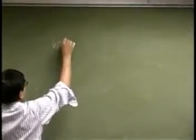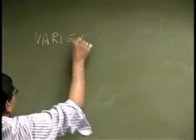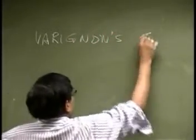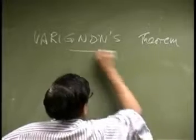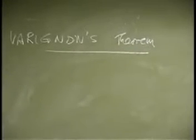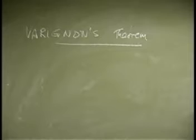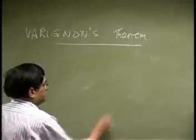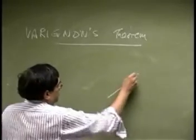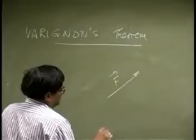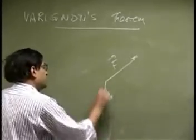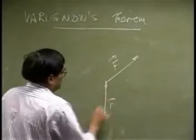One is called Varignon's theorem, and it simply says that the moment of a force about a known point is the same as the sum of the moments of the components of the force. For example, if we had a force F and let's say you had a point O, then the moment of that is known - we already know that MO is R cross F.